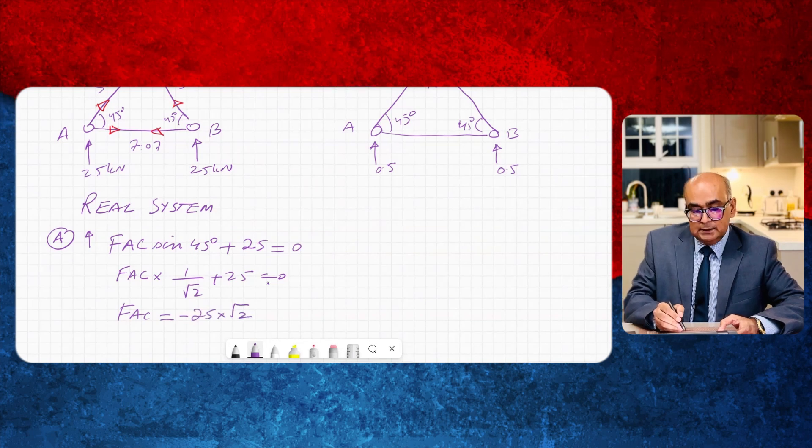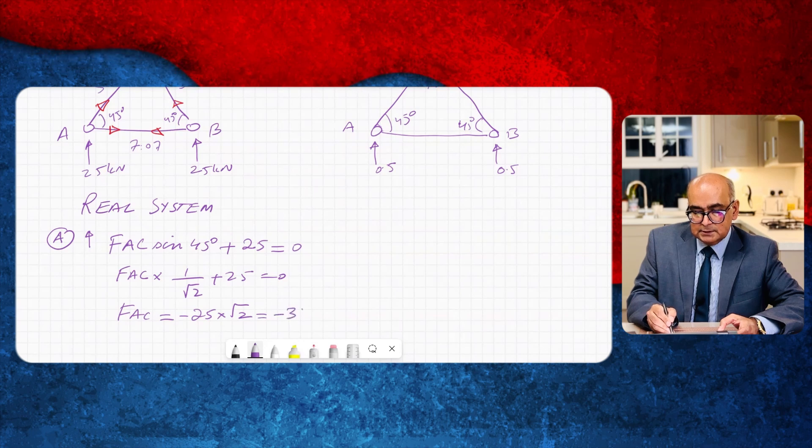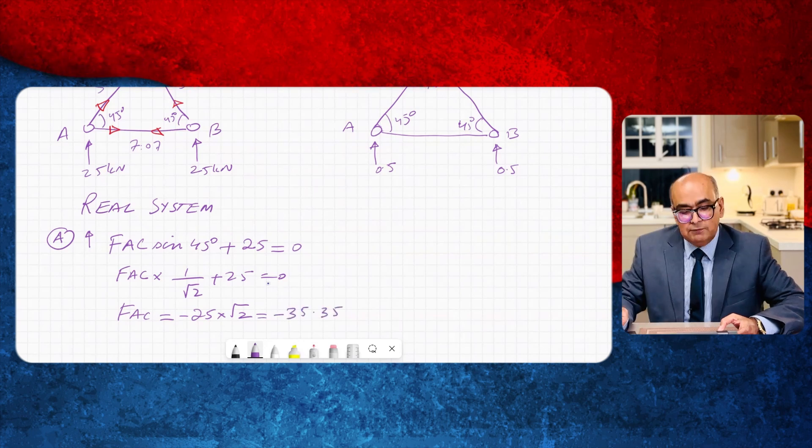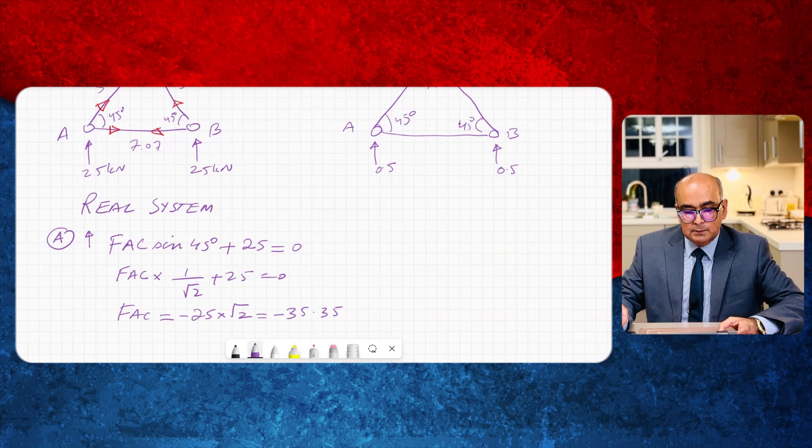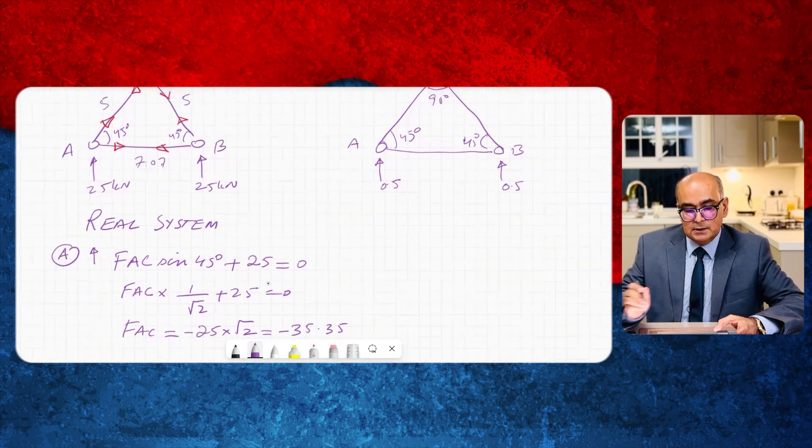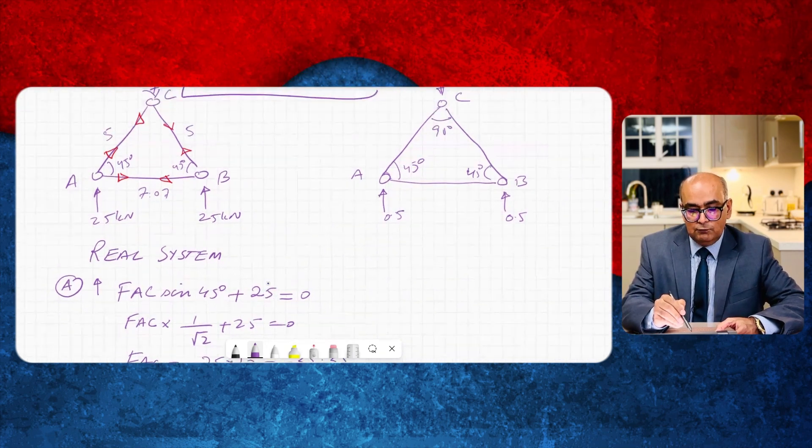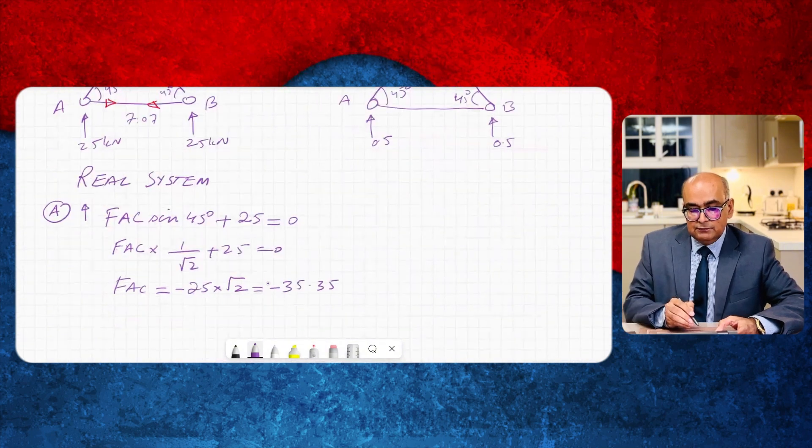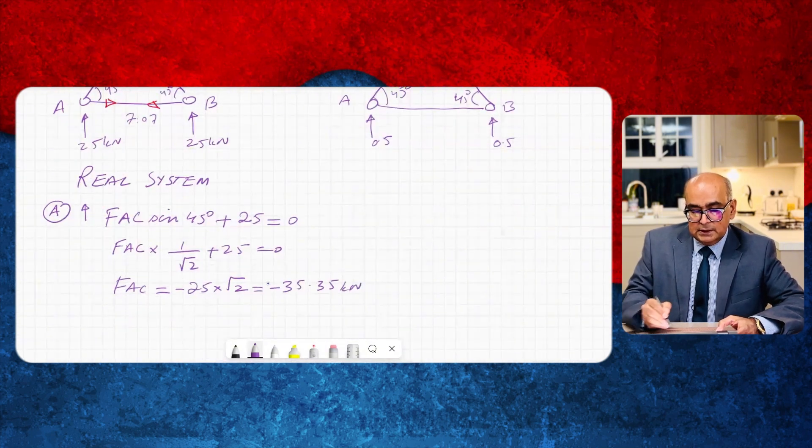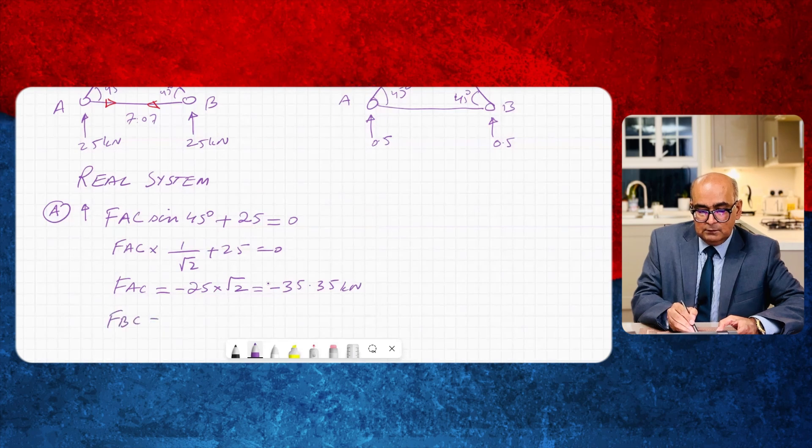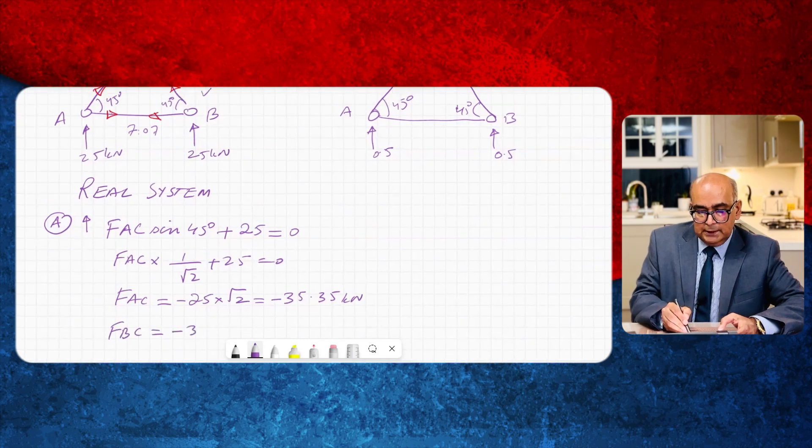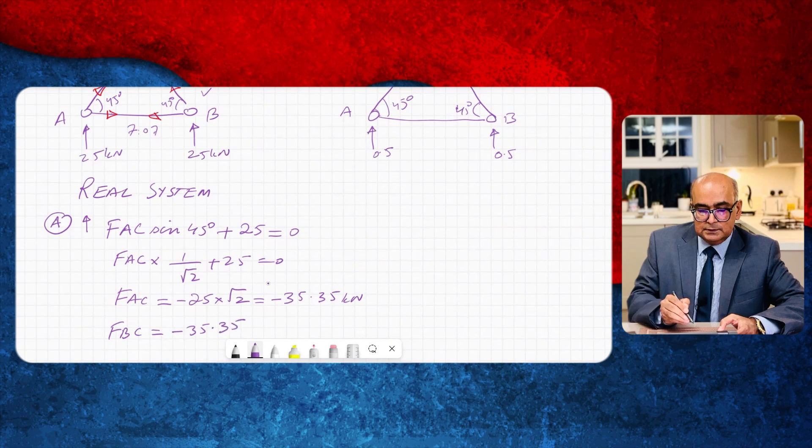So FAC sine 45 is 1 over under root 2 plus 25 is equal to 0. If you bring this on the other side FAC will be equal to 25 minus 25 into under root 2. If you multiply both you will get value of FAC minus 35.35. In the same way by using symmetry you will have value of FBC as minus 35.35 kilonewton as well.